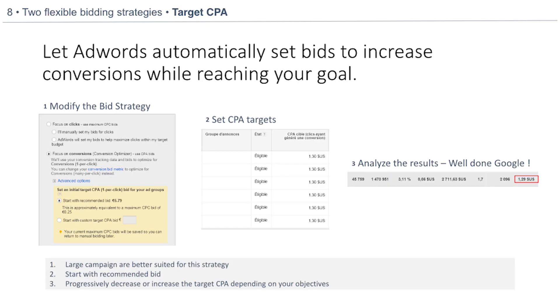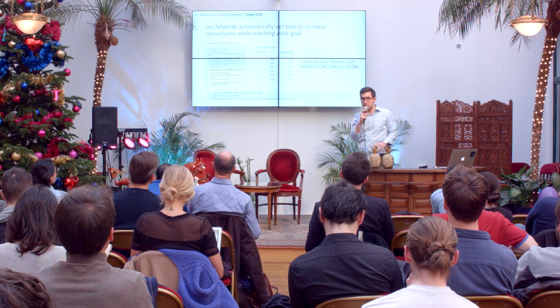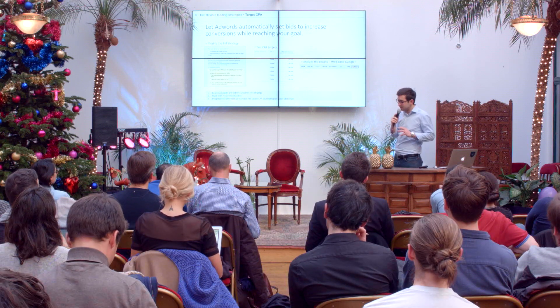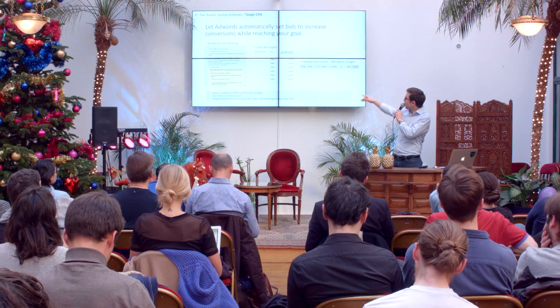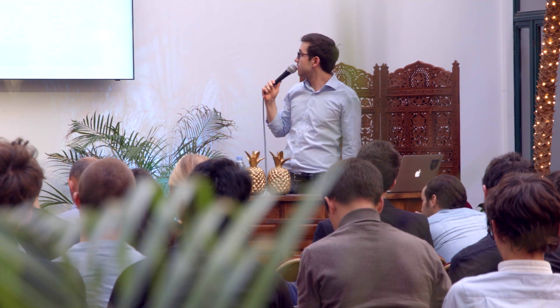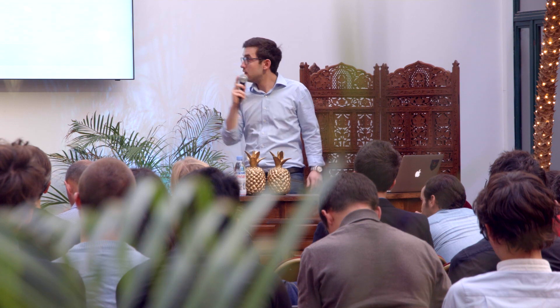Here's how it works: in the campaign settings, instead of focusing on clicks and manually setting bids for clicks, you will focus on conversions. AdWords will recommend a cost per acquisition — in this case 6.79. I advise you to stick with that figure when you start implementing this flexible bidding strategy. Everything then happens at the ad group level: you will see the CPA target you set — in this case 130 US dollars. Then you analyze the results. In this real campaign screenshot, the target is 130, and the actual CPA is 129 — very close to what I targeted.